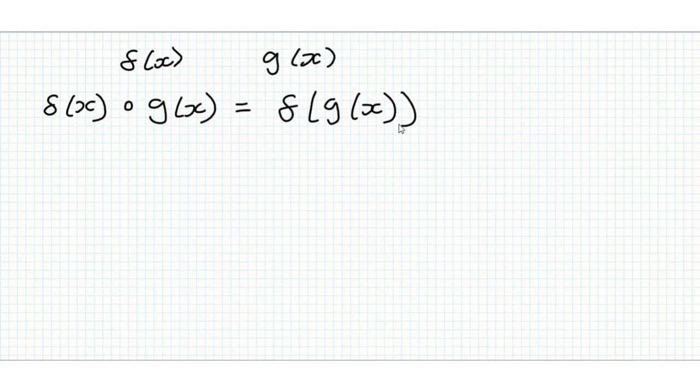And this might look a little bit confusing, but all this means is we take our input value of x, we put it into g, and then we put the output of g of x into f of x. It's important to note as well that g of x composed of f of x is equal to g of f of x. And that is not necessarily the same as f of g of x. So that's something important to look out for. So the order matters when you compose these functions together.